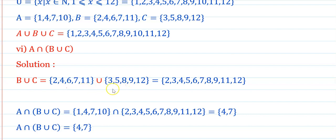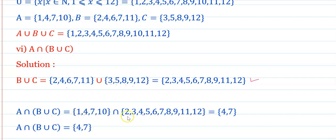B union C = {2, 3, 4, 5, 6, 7, 8, 9, 11, 12}. Now A intersection (B union C): A = {1, 4, 7, 10}. The common elements between A and (B union C) are 4 and 7. Therefore A intersection (B union C) = {4, 7}.